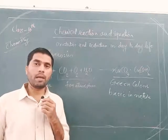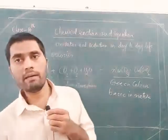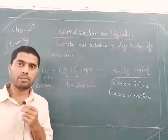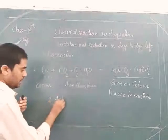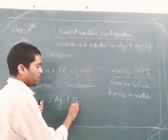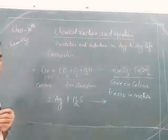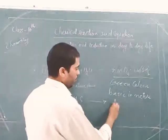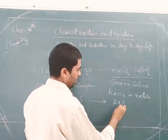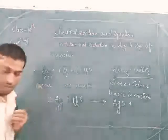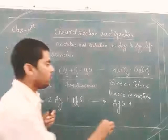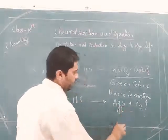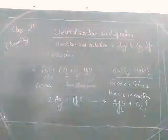The third example is corrosion of silver, or the black coating seen on silver jewelry. Silver jewelry sometimes becomes black because of silver sulfide. The reaction is: 2Ag + H₂S (hydrogen sulfide gas present in the atmosphere in low concentration) → Ag₂S (silver sulfide) + H₂ gas. The valency of sulfur is 2, that is why we take Ag₂. Ag₂S is silver sulfide, which is black in color.